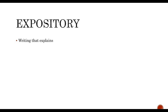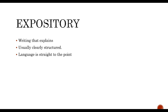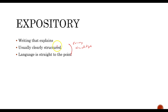The next type of writing is expository writing. Expository writing is writing that explains something. Usually expository writing has a very clear structure, and the language is usually really straight to the point, because the whole idea of expository writing is to convey knowledge — basically trying to tell us something, have us learn something.